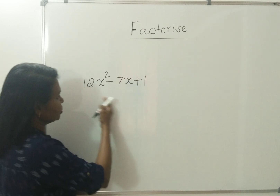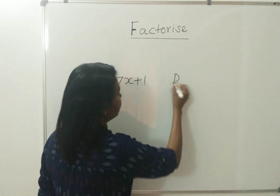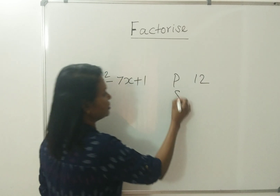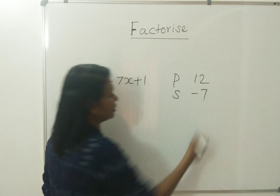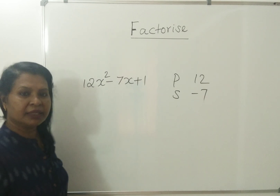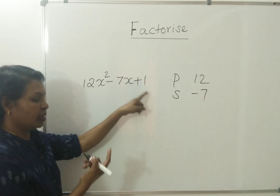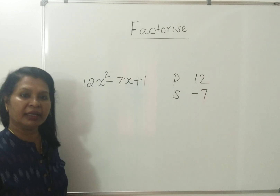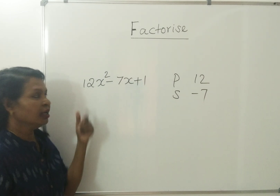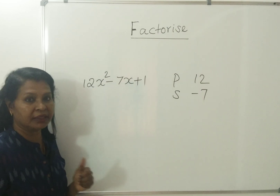Product is 12 into 1. Product is 12. And sum is minus 7. We are going to factorize using middle-term splitting. The number here is a plus number with product 12. You will transform to find the sum of minus 7, then take the middle-term split.